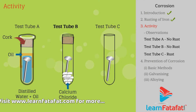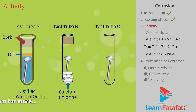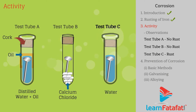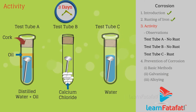In test tube B, put anhydrous calcium chloride and cork it — it absorbs the moisture. In test tube C, put some water and cork it. Leave this as it is for 3 days.